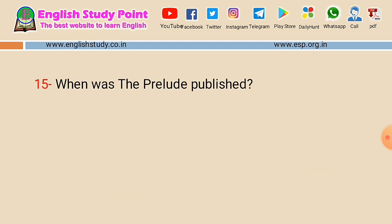The last question, question fifteen: when was the Prelude published? The answer is 1850 — after his death. The Prelude was published posthumously in 1850, after the death of William Wordsworth. This video is now complete. See you in the next video.